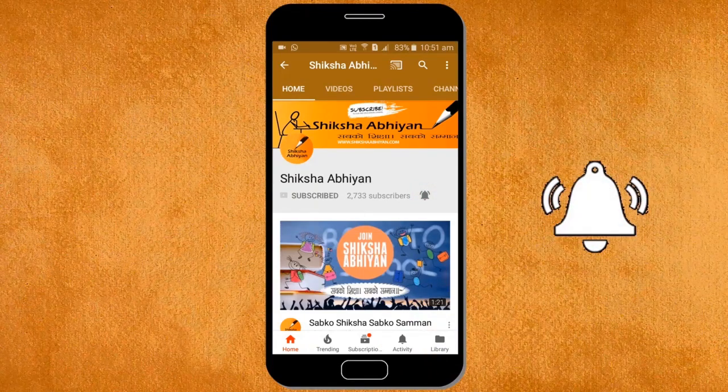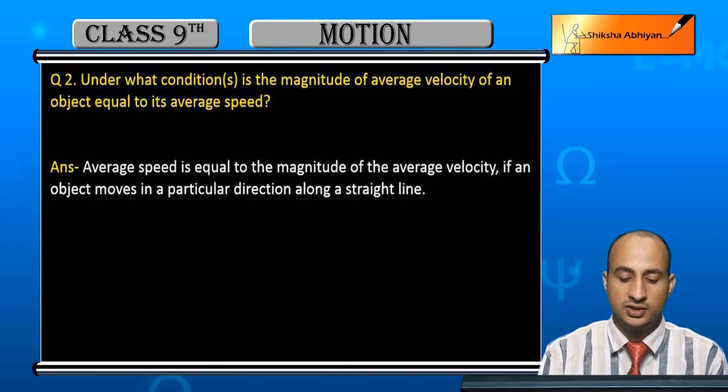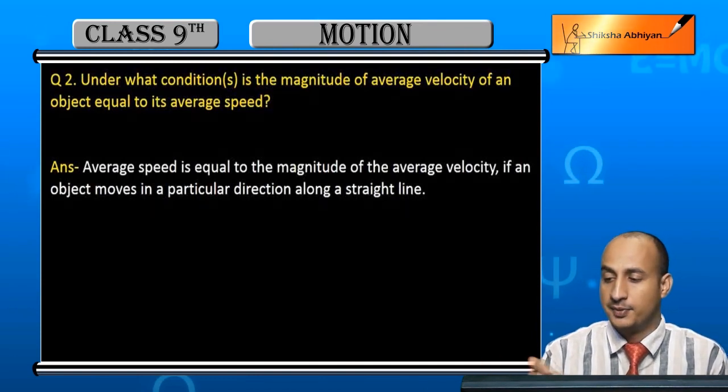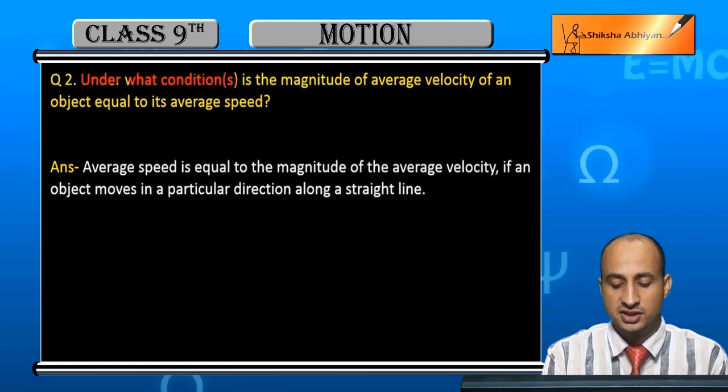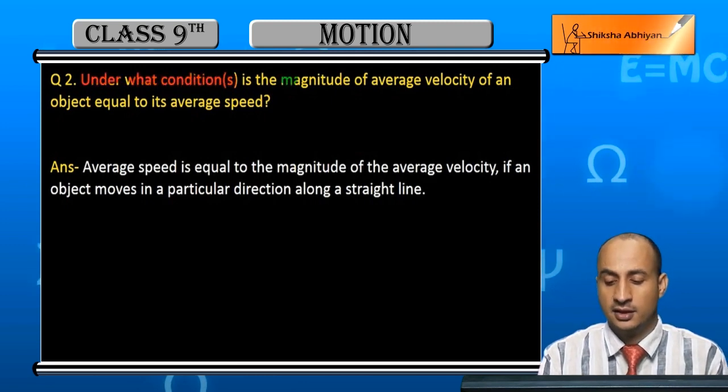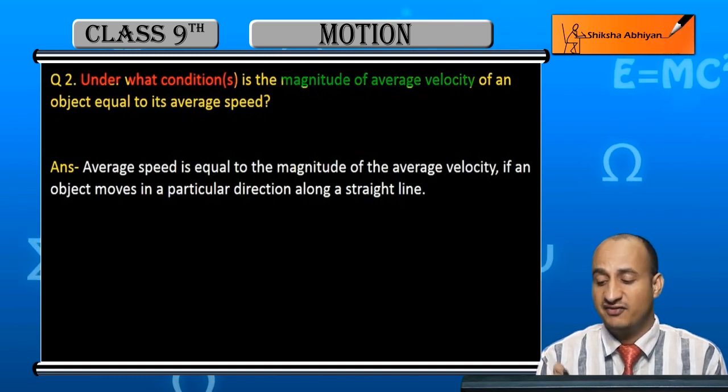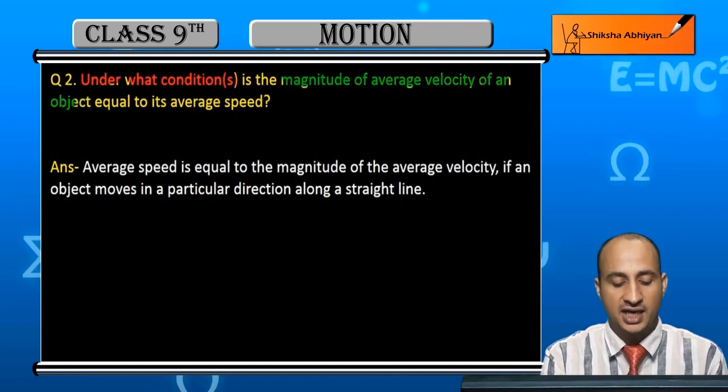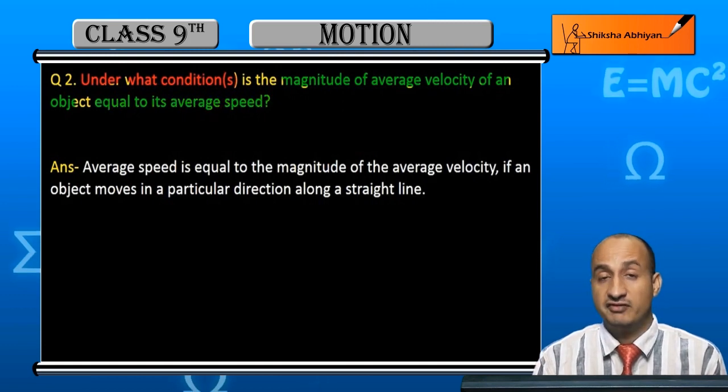Now students, see Question 2. Question 2 is: Under what condition(s) is the magnitude of average velocity of an object equal to its average speed?